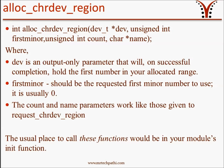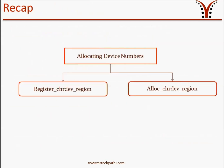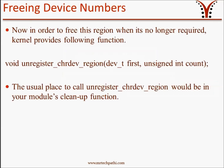The usual place to call these functions would be in your module init function. To recap, we have learned two ways to allocate device numbers for our character driver: register_chrdev_region and alloc_chrdev_region. To free device numbers when they are no longer needed, the kernel provides unregister_chrdev_region, which takes two arguments — 'first' and 'count' of types dev_t and int respectively. The usual place to call unregister_chrdev_region is in your module cleanup function.